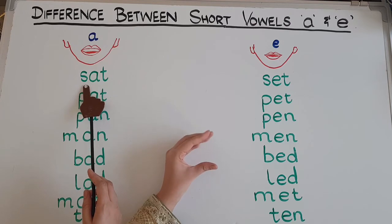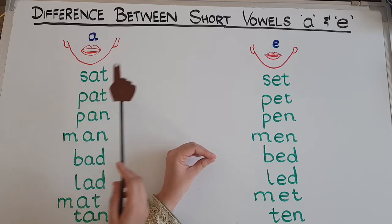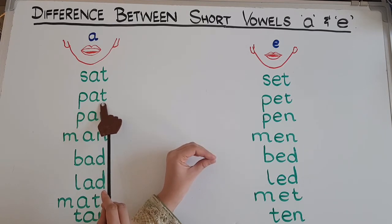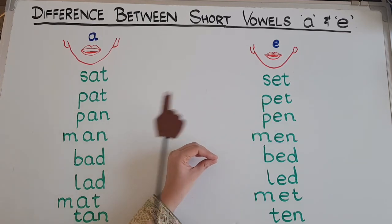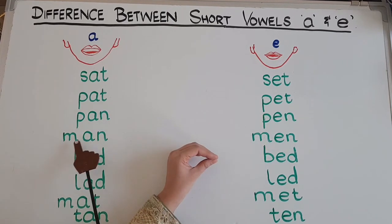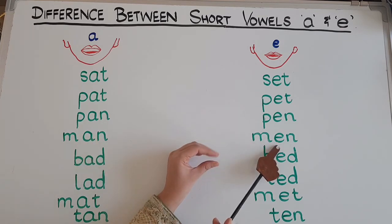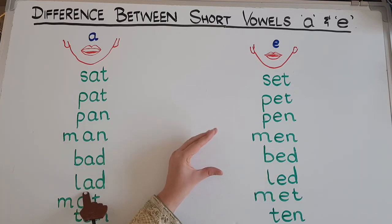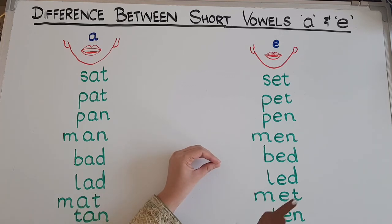The first word pair is sat — set. Pat — pet. Man — men. Bad — bed. Led. Mat — met. Tan — ten.